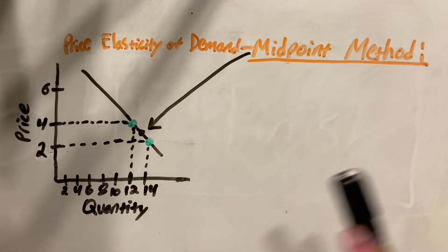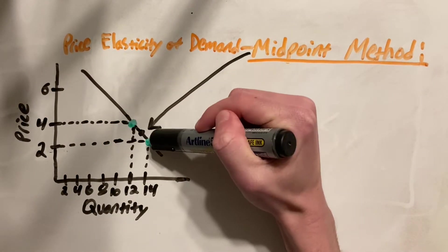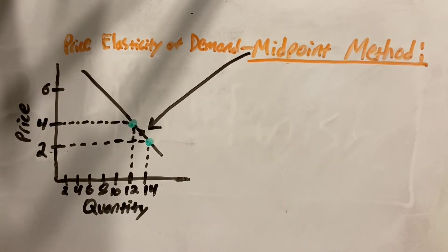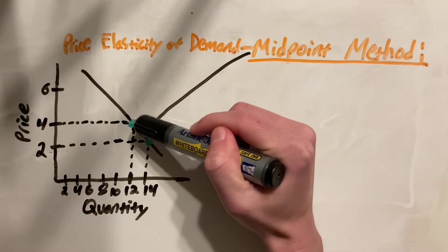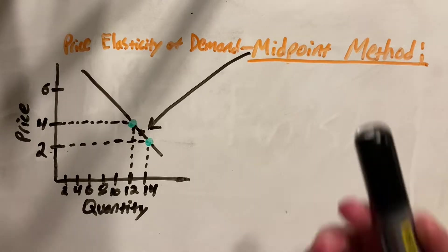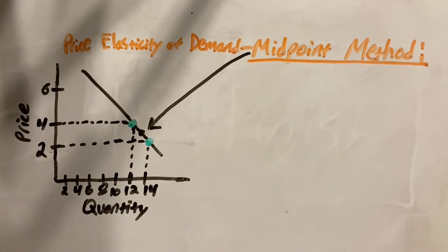Hello and welcome. In this video, we're going to look at how to find the price elasticity of demand using the midpoint method. The midpoint method is when you find the point between two points, the midpoint. And this gives us a good average of the price elasticity of demand, which is quite accurate.